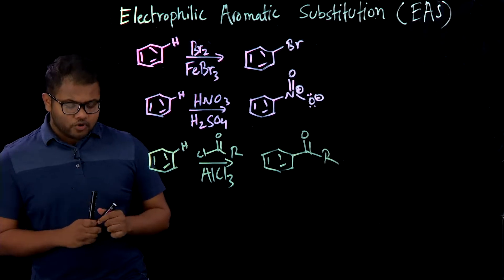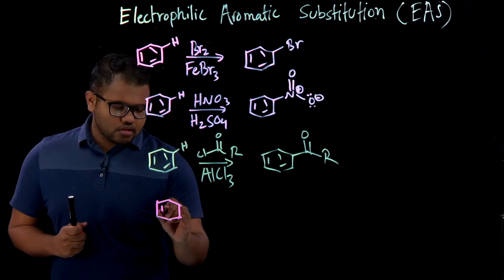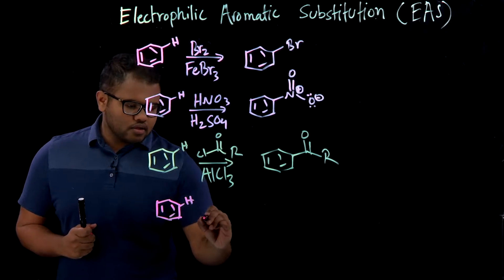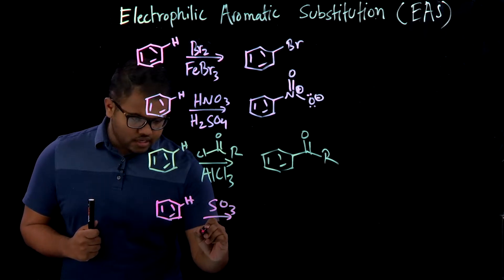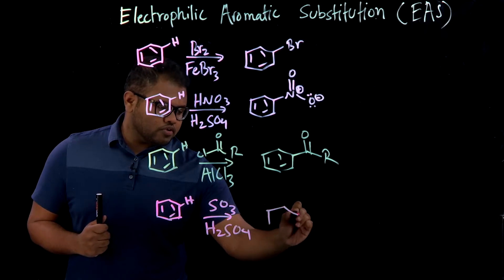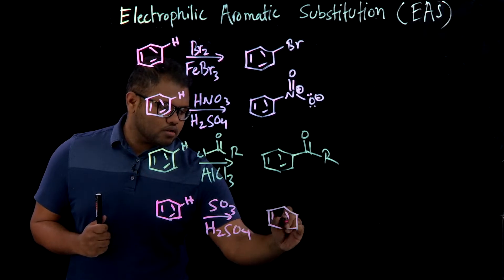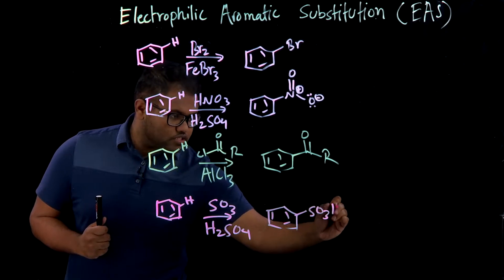And fourth and final example is again benzene ring with SO3 and sulfuric acid again in order to get SO3H on this position.